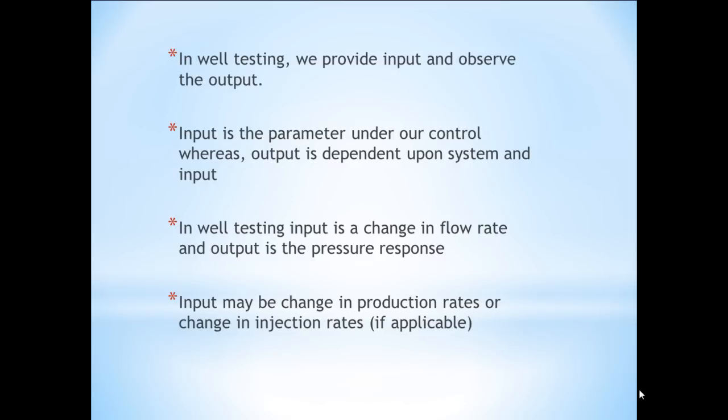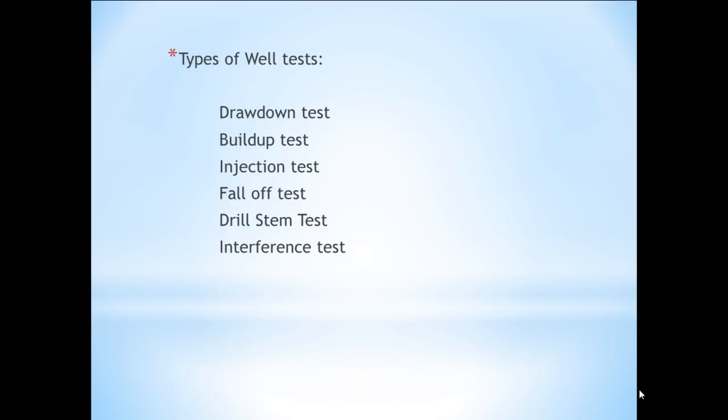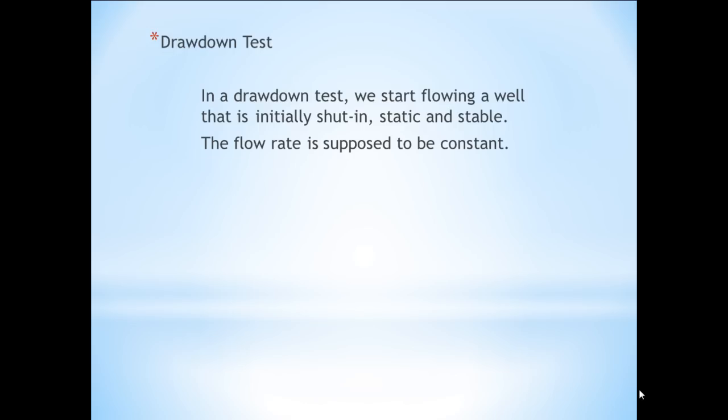The types of well tests are: drawdown test, buildup test, injection test, fall-off test, drill stem test, and interference test. In a drawdown test, we start flowing a well that is initially shut in — static and stable — and the flow rate is assumed to be constant.